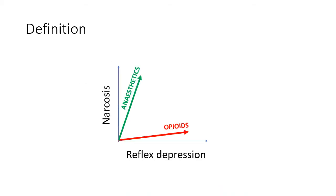This diet of narcosis and reflex depression has given rise to the idea that these phenomena represent two axes on a Cartesian plane of anaesthesia. General anaesthetic drugs tend to cause a good deal of narcosis but less reflex suppression. Opioids tend to do the opposite, and so propofol and remifentanil is a match made in heaven.